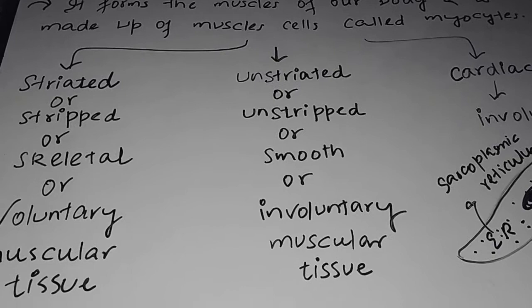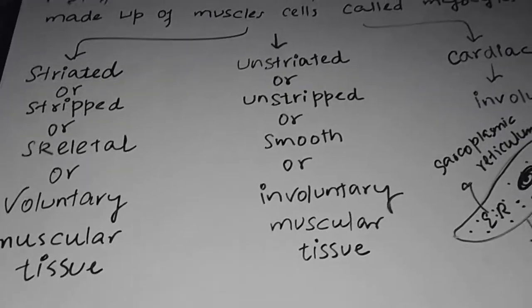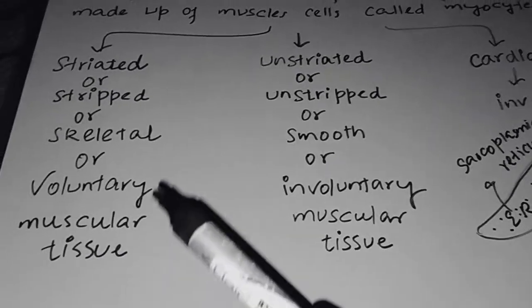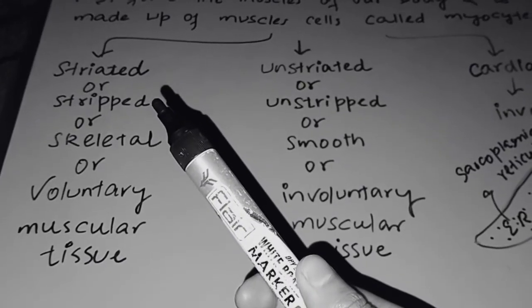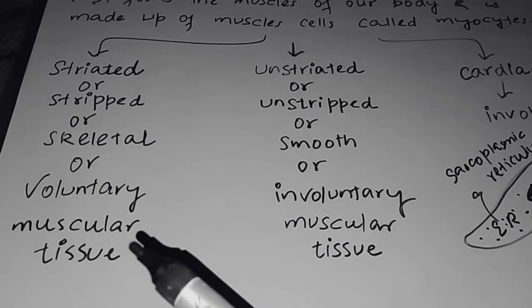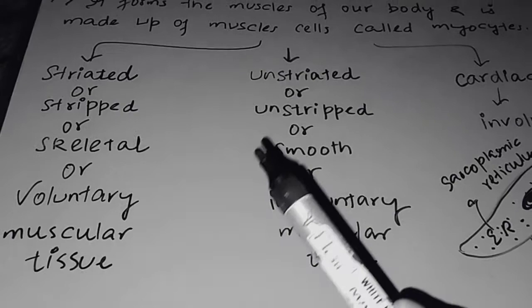Now depending upon the location, this muscular tissue is of three types. That is striated muscular tissue, its other name is striped or skeletal or voluntary muscular tissue.